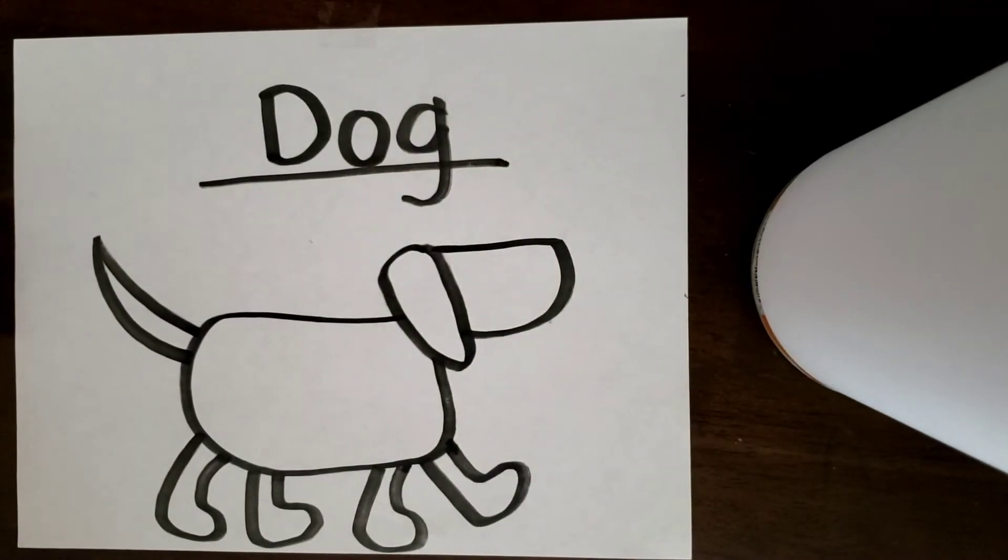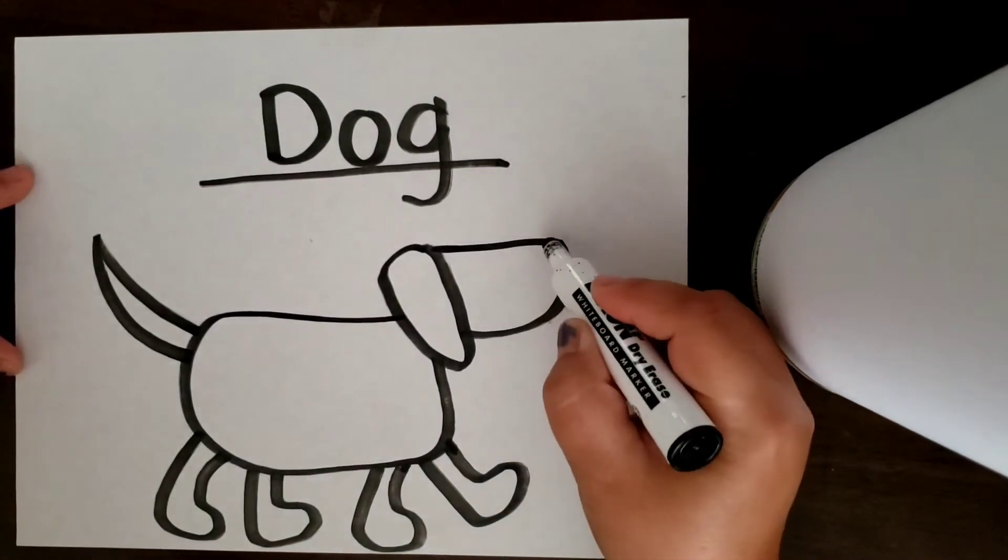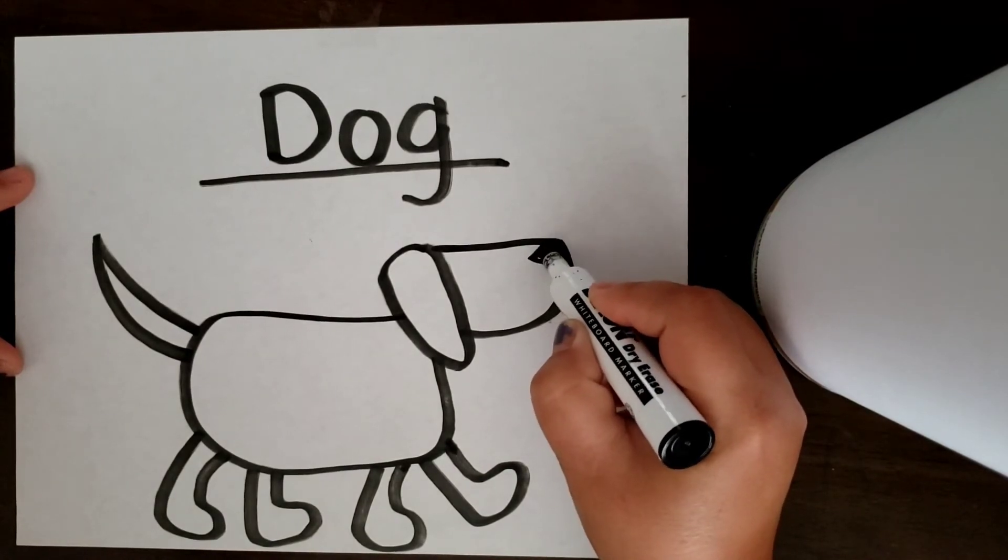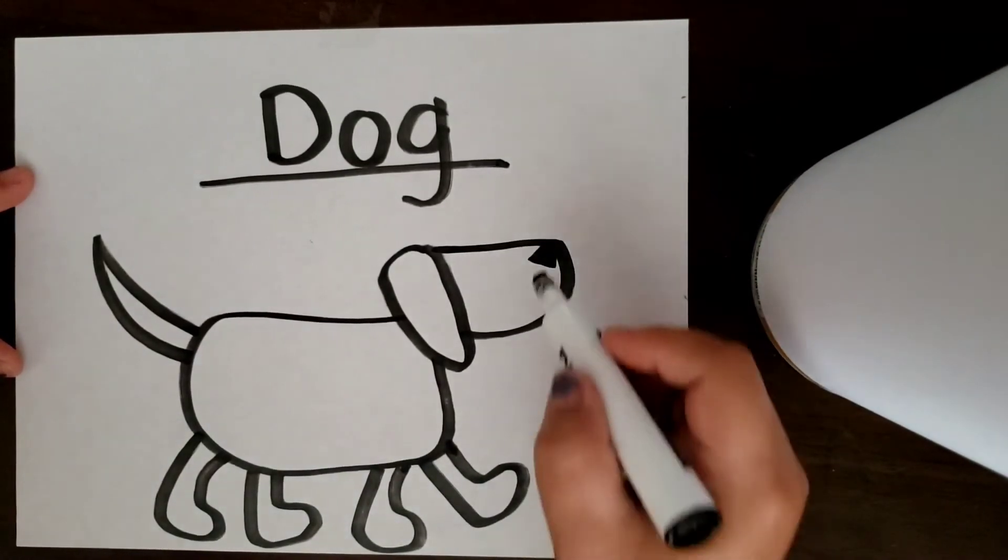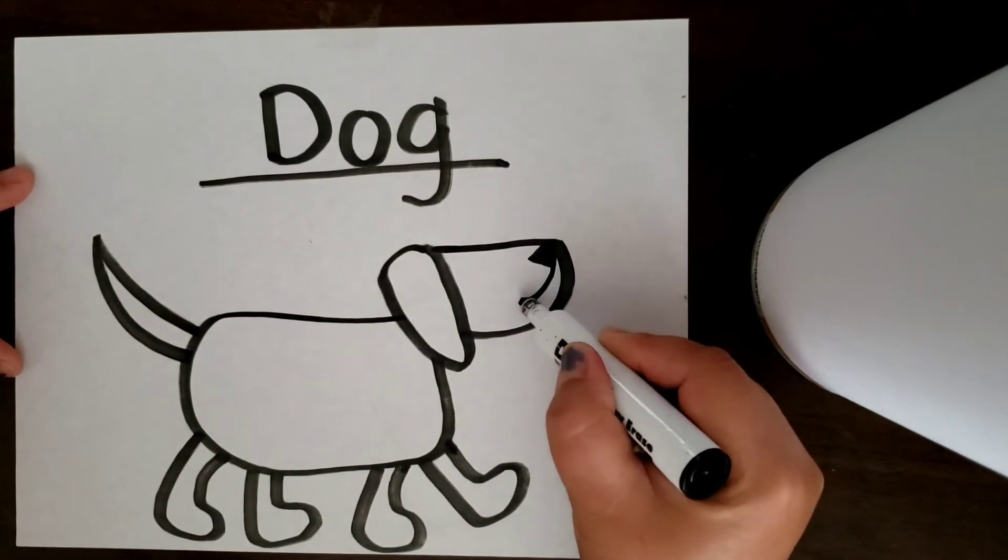Okay, we are almost done. All we need is his nose, mouth, and eyes. So I'm going to put his nose right in the corner. I'm going to make a triangle. And then from the point I'm going to go out and around.